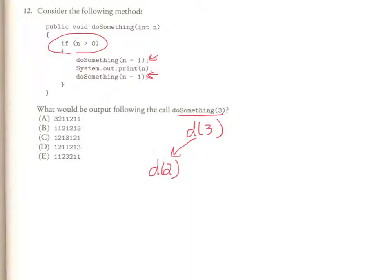So I call do something 2. I do not execute any of those lines of code below. I kick back up to the top of the method, and I call do something 1. I continue this process and call do something 0. As soon as I call do something 0, that right here meets the condition to not continue the recursive call.